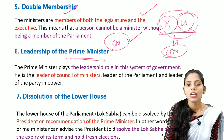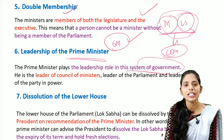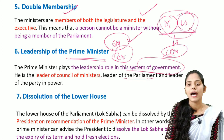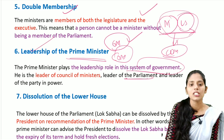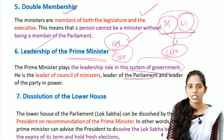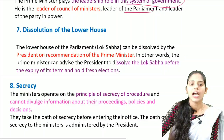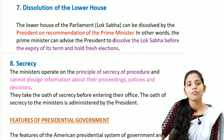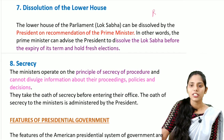The next feature is the leadership of the prime minister. The prime minister plays an important role of leadership in this system — he is the leader of the council of ministers, leader of the parliament, and leader of the party in power. The next important feature is dissolution of the lower house. This is linked to the bicameralism we studied earlier, with the two houses — the upper house and the lower house.